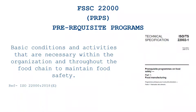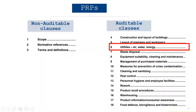PRPs are the basic activities or requirements that we need to fulfill throughout the chain to maintain food safety. PRPs are divided into three clauses: non-auditable clauses, which are the first three clauses, and auditable clauses. In auditable clauses I have described clause number four and five in my previous videos. In this video I am going to share about PRP number six.